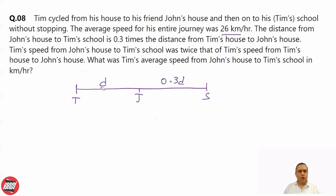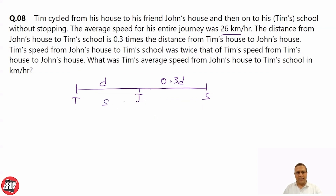Tim's speed from John's house to school is twice his speed from his house to John's house. So if the speed from Tim's house to John's house is S, then the speed from John's house to school is 2S.